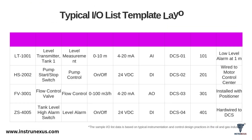Let's look at another practical example. This table shows a typical IO List layout filled with sample data. The first row has Tag No. LT-1001, with service 'level measurement for Tank 1.' The signal type is 4-20 milliamps and its range is 0 to 10 meters. This is a transmitter sending a signal to the DCS, so its IO type is analog input (AI). It's wired to DCS cabinet 01, terminal 101, and the remarks note a low level alarm at 1 meter. The second row, HS-2002, is a pump start/stop switch – its signal isn't a range, it's just on-off, making it a digital input (DI). This level of detail, repeated for thousands of points, is what it takes to build a plant.